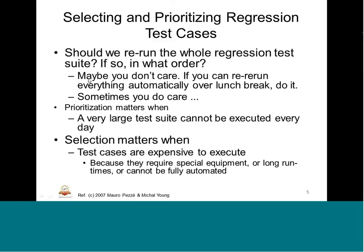One answer could be: maybe you do not care — if you can re-run everything automatically over a lunch break, do it. That means you have the confidence that the entire suite can be re-run without issues or stoppages in something like 2 to 3 hours — then better to go for the entire regression suite. But sometimes that is not true, and we need to break up the existing test suite to map to the regression areas where we had issues that are now resolved, and prioritize different types of regression test suites and scenarios accordingly.